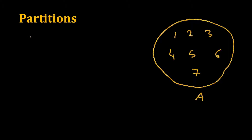Now let's see what are partitions of a set. If we have set A, the partitions of a set would divide it into subsets. For example, one part contains one, two, four; a second contains three, six; and a third contains five, seven. These three would be the partitions of set A, and we see that there is no region common to these.